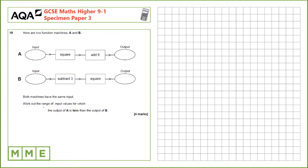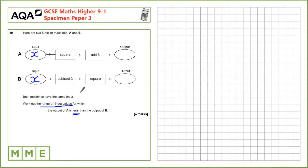There are a few things in this question which signify where we should go. We're working out a range of input values and we're thinking about something being less than something — that's suggesting we're using an inequality. Both machines have the same input, so we need to calculate what the input is. Let's say both inputs are X.